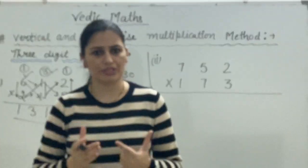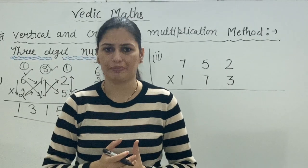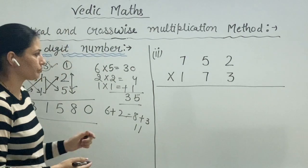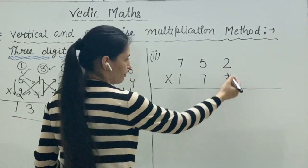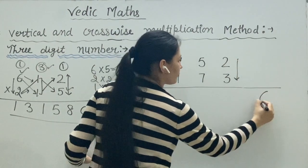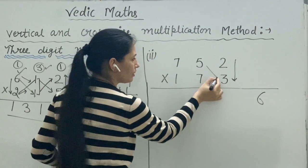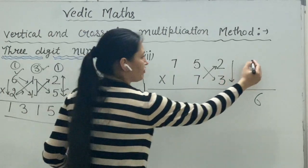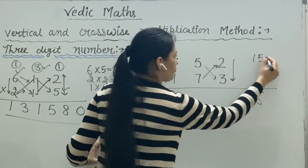Let's see another example. First, we do vertical multiplication: three twos are six. Next, crosswise multiplication: five threes are fifteen, and seven twos are fourteen. That is twenty-nine — put nine here and two as a carry.